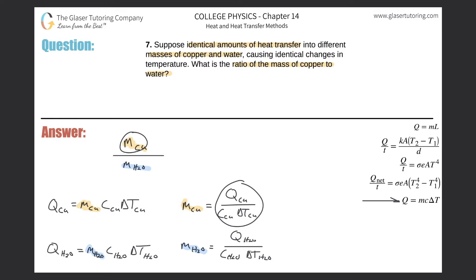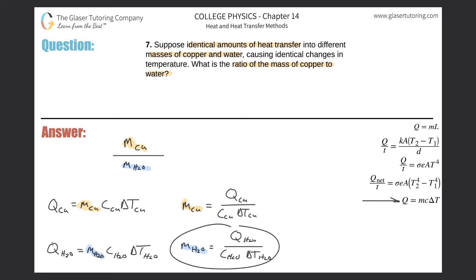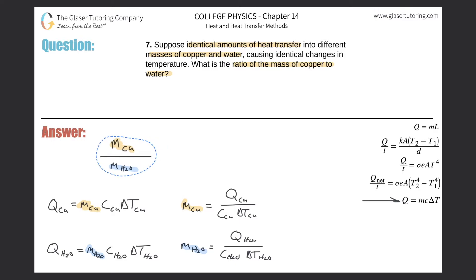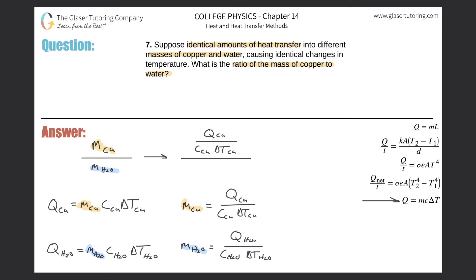Now I notice the mass of copper and the mass of water can be combined into a ratio. I can expand the mass of copper over the mass of water into: the heat energy gained or lost by copper divided by the specific heat of copper times the change in temperature of copper — all divided by the heat energy of water divided by the specific heat of water times the change in temperature of water.